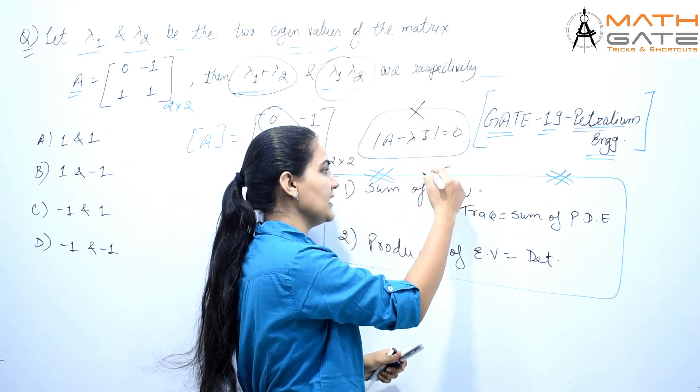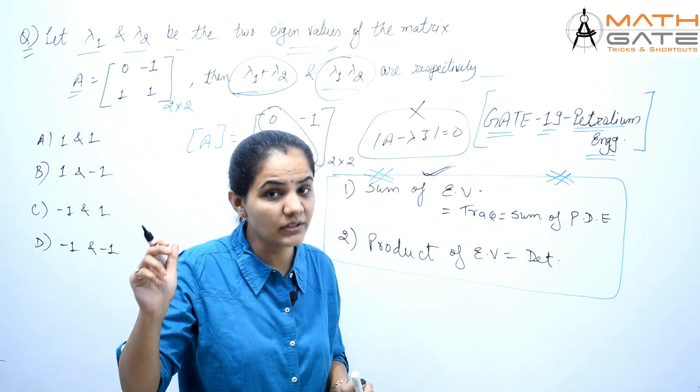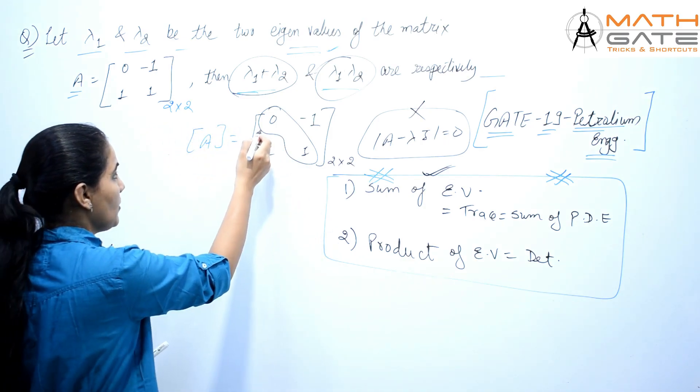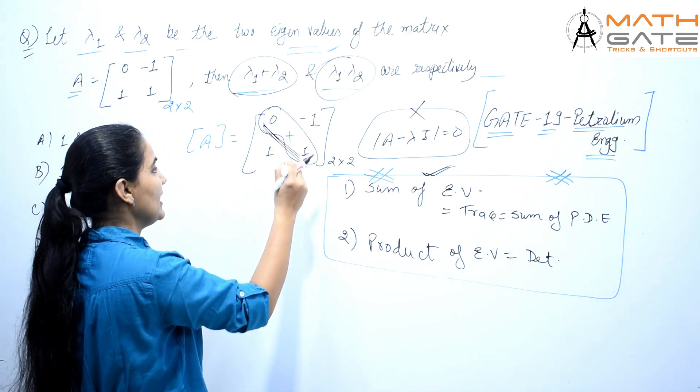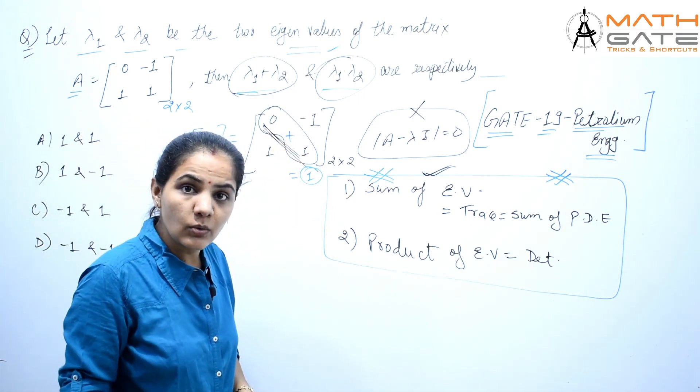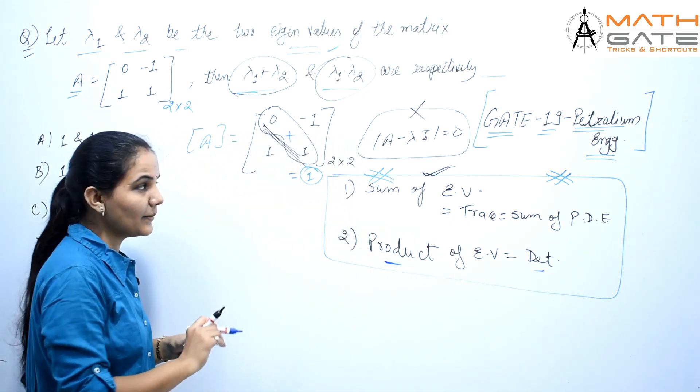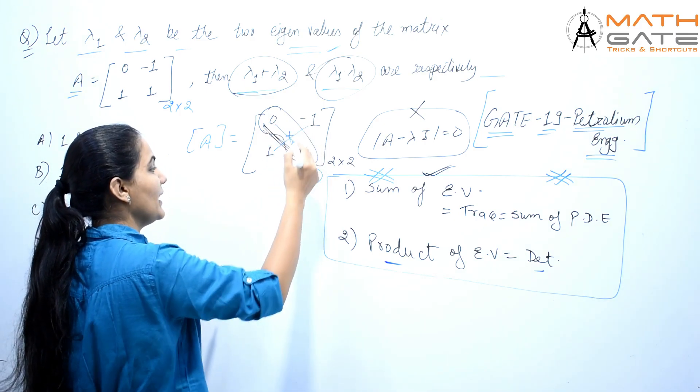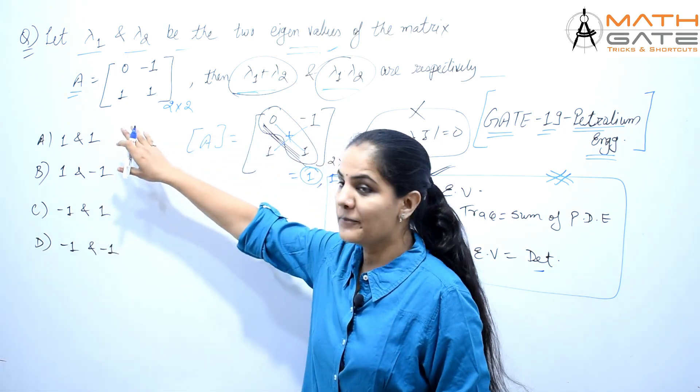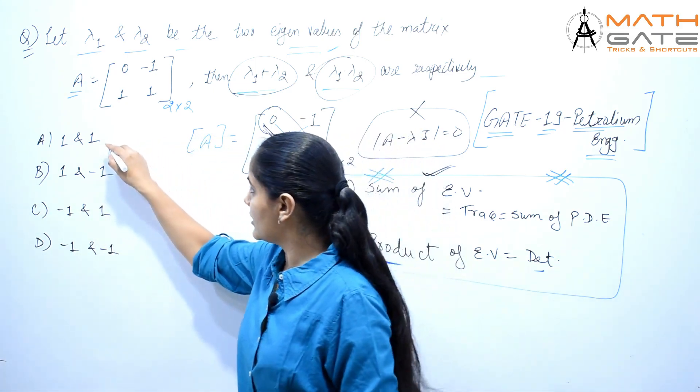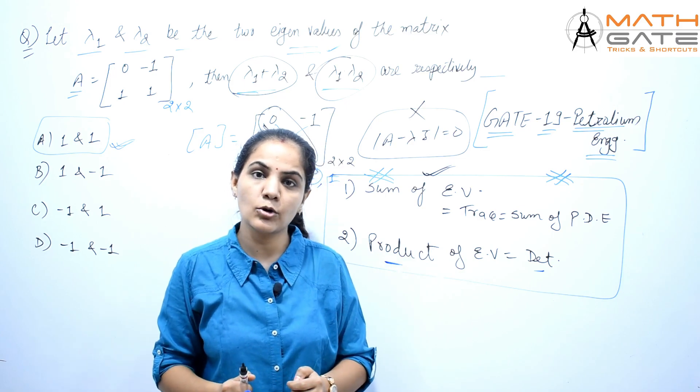So the sum is 0 plus 1, that is equal to 1. This means the sum is 1. Then for the 2×2 matrix, the product is the determinant, which is 0 times 1 minus (-1) times 1, which equals 0 minus minus 1, so that's 1. Sum is 1 and product is 1, so which option is this? This is only in option A. So this is our right answer.